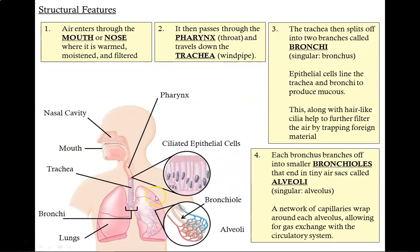Each bronchus branches off into smaller branches called bronchioles, and at the end of these bronchioles are little air sacs called alveoli — the singular is alveolus. Each air sac has a network of capillaries wrapped around it, allowing for gas exchange to occur. Here in the lungs, carbon dioxide is dropped off from the blood into the air sacs so it can be breathed out when you exhale, while the oxygen inside these air sacs diffuses into the blood so it can be carried back to the heart and distributed to the rest of the body.